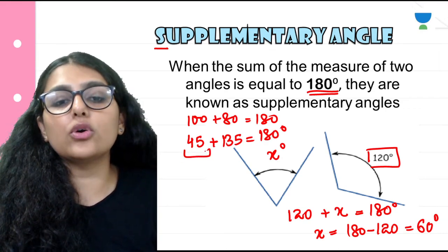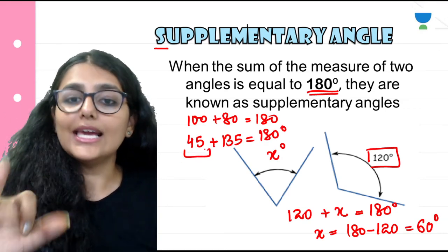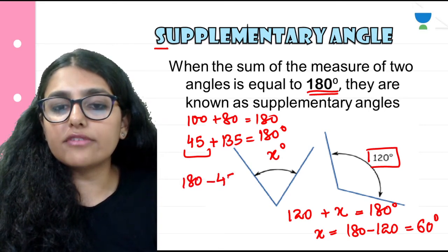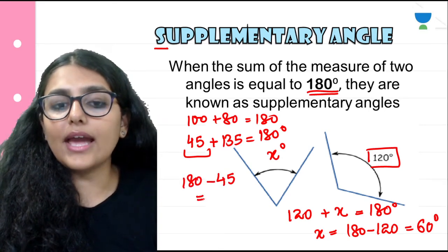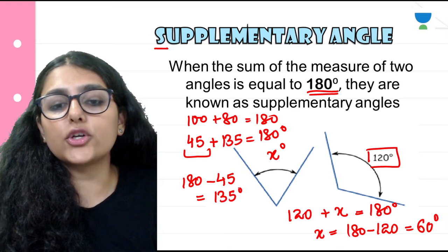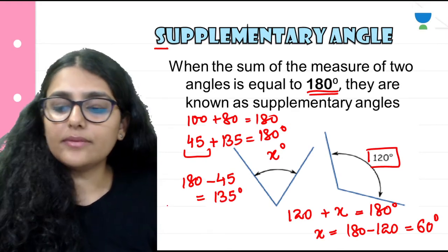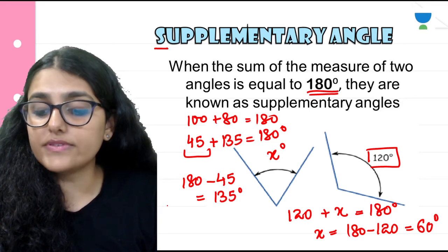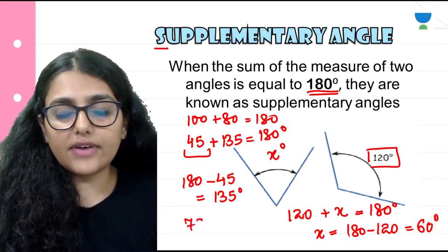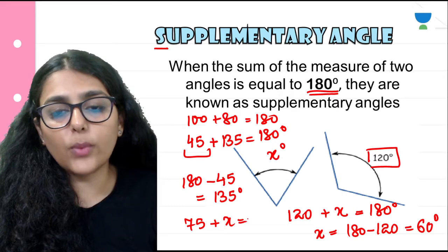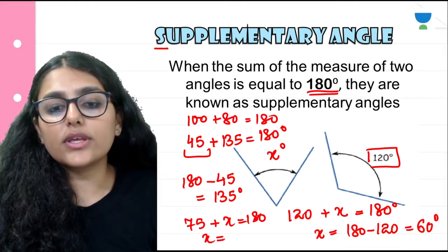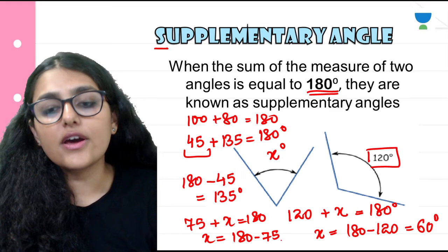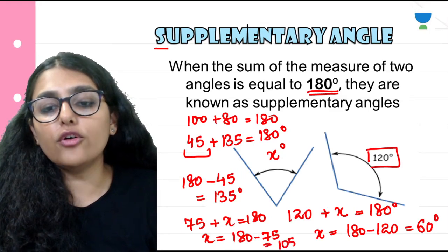To find the supplement, if I am given 45 degrees, I simply do 180 minus 45 and whatever remains is the supplement of 45. What is the supplement of 75 degrees? I need to add something to 75 to get 180. So x equals 180 minus 75, which is equal to 105 degrees.